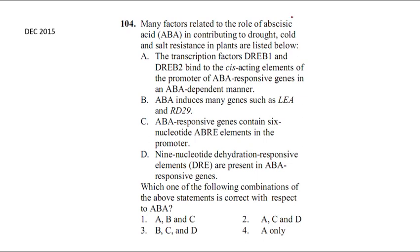Regarding the role of abscisic acid in contributing to broad cold and salt resistance in plants: transcription factors DREB1 and DREB2 bind to cis-acting elements of the promoter of ABA-responsive genes in an ABA-dependent manner, meaning ABA stimulates DREB1 and DREB2. ABA also induces many genes such as LEA protein and RD29 - LEA is late embryogenesis abundant protein, induced in response to ABA. Both help in stress tolerance.